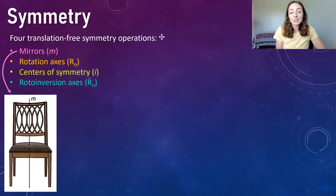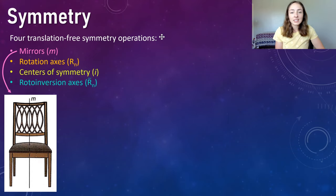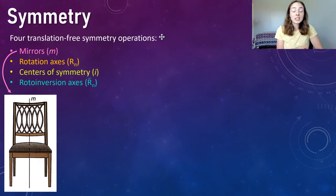First, we have mirrors. Mirrors are relatively simple because we use mirrors every day and we kind of understand what it would mean if something had a mirror plane of symmetry. Basically, it means there's a plane that you can pretend goes through that object or molecule or crystal, and on either side of that plane is the mirror image of the other side.